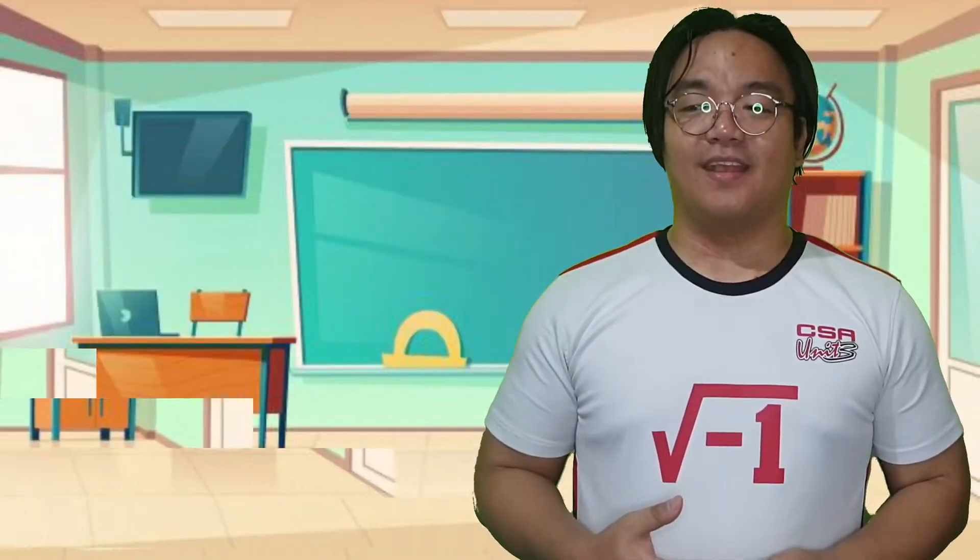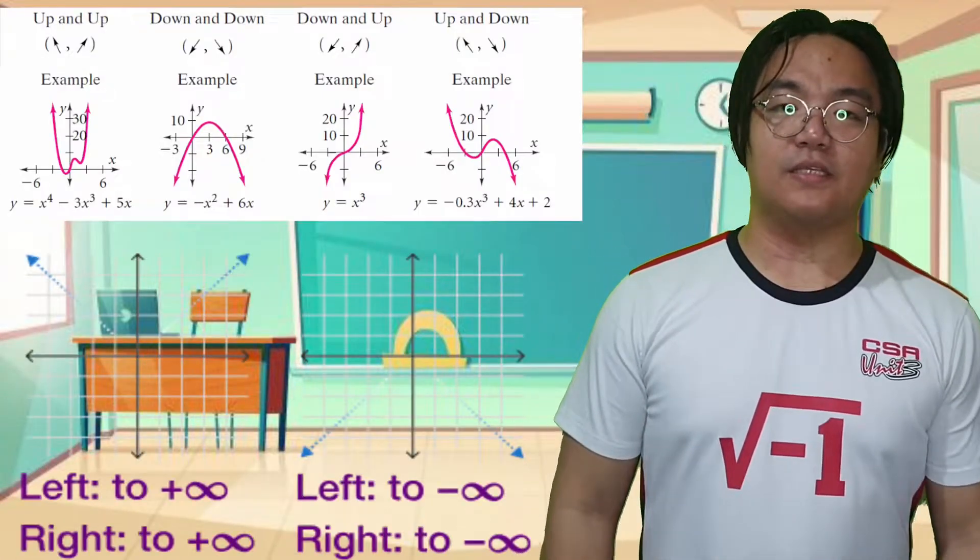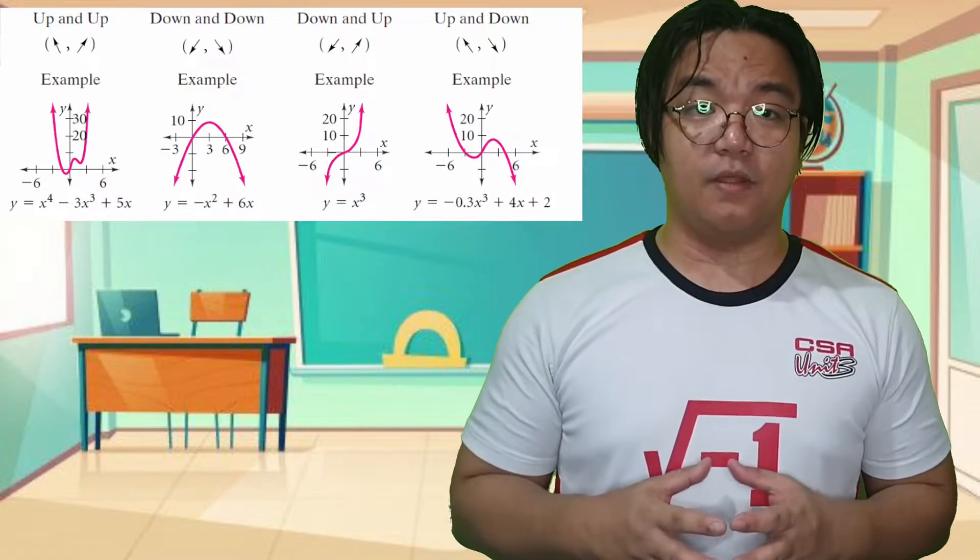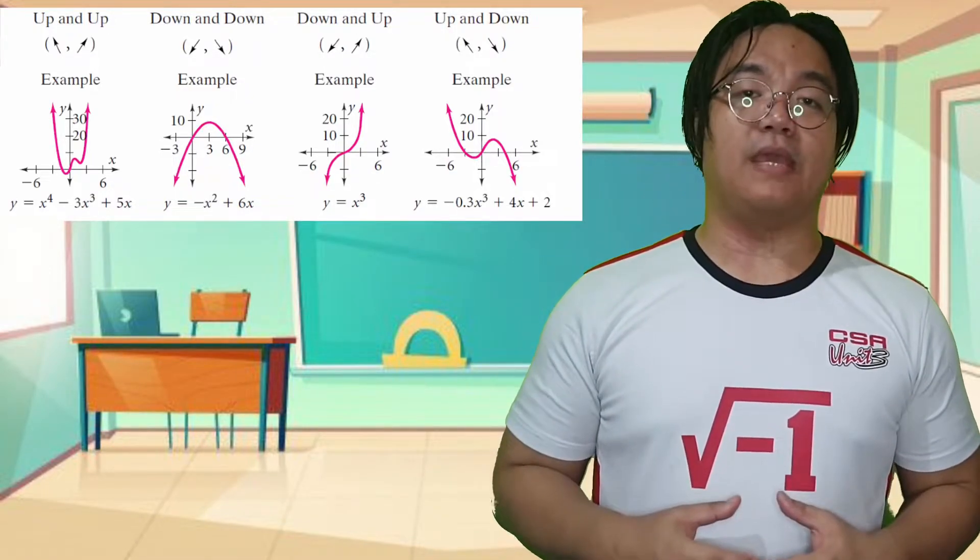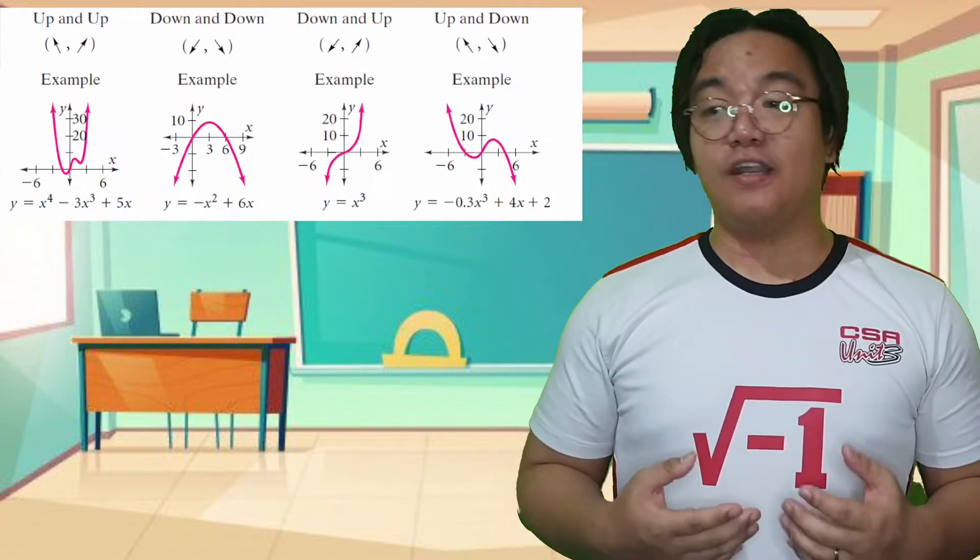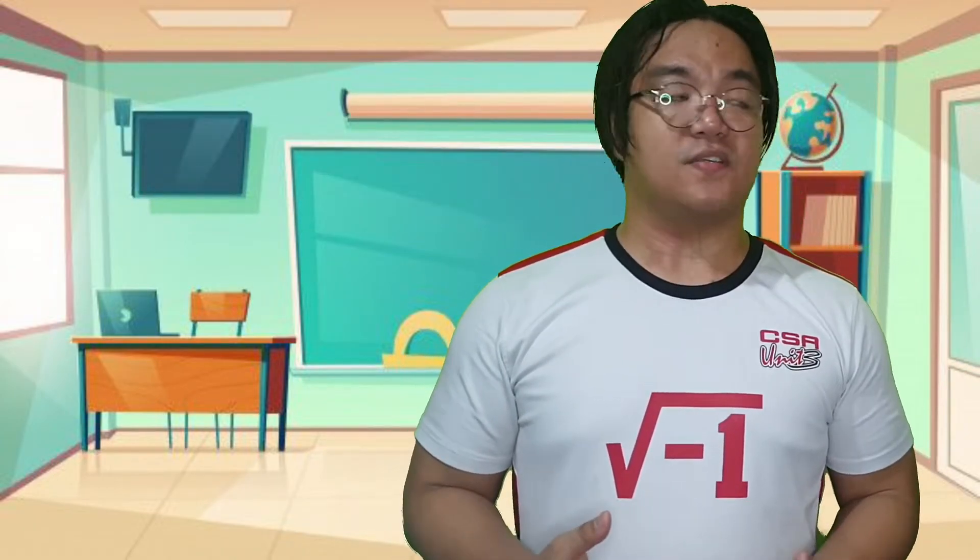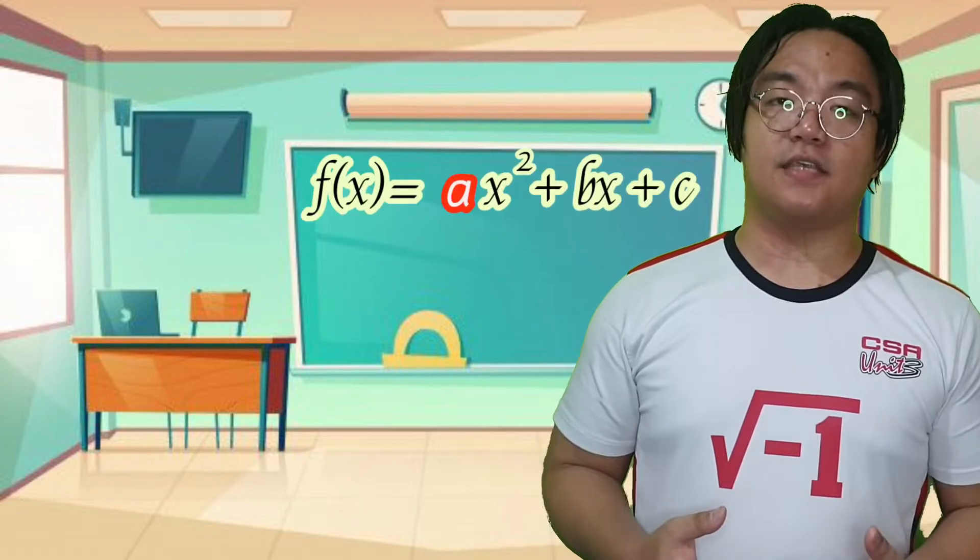There are several possibilities for the end behavior of a polynomial function. Let's start by learning how to figure out what the end behavior is. For example, for quadratic functions such as f(x) = ax² + bx + c...